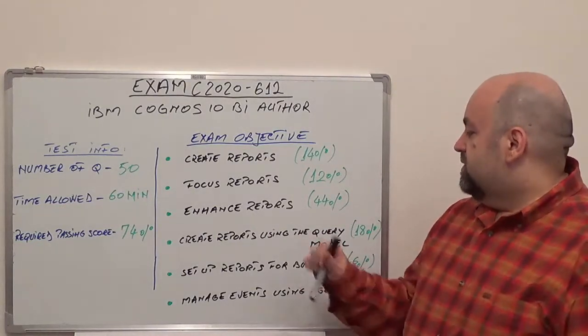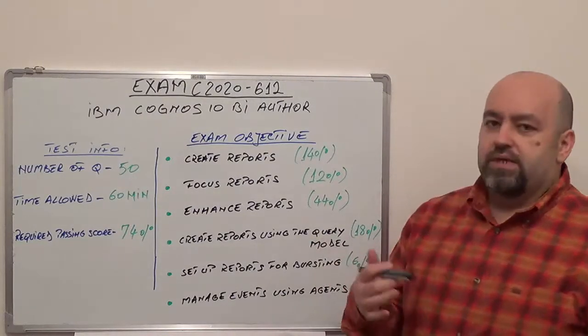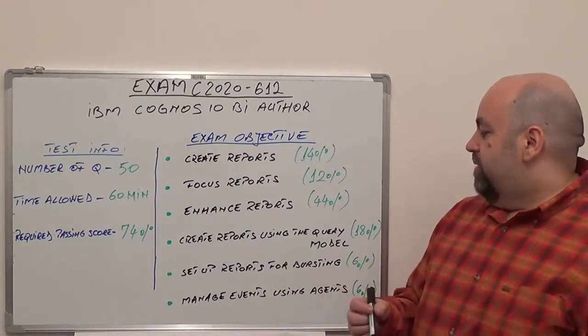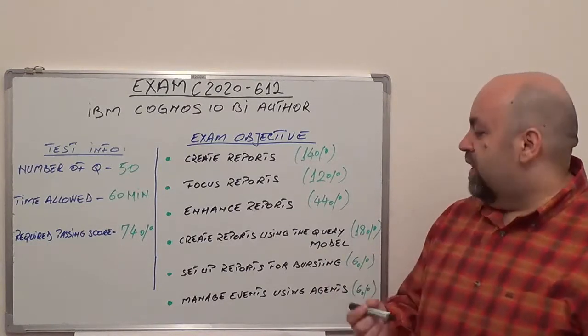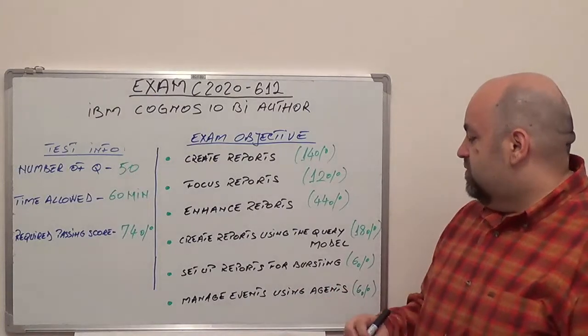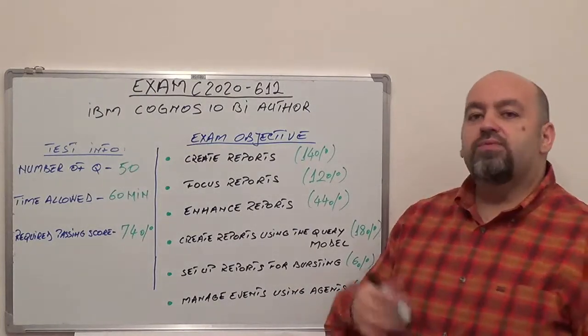Create reports using the query model, 18% of total questions. Setup reports for bursting, 6% of total questions. And the last one is going to be manage events using agents, 6% of total questions.